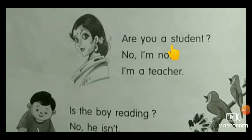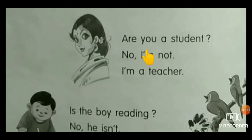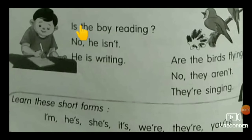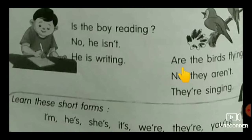Are you a student? No, I am not. I am a teacher. This picture is talking about ourselves, that's why we use AM. Is the boy reading? No, he isn't. He is writing. Are the birds flying? No, they are not. They are singing. After a plural pronoun we use ARE.